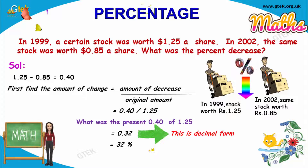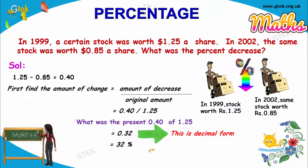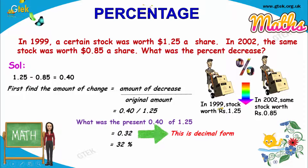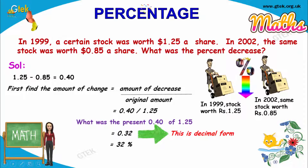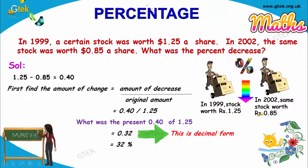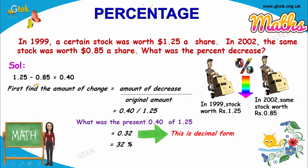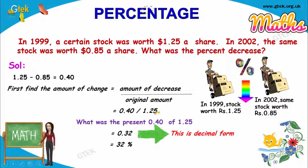We'll move to the next problem. In 1999, a certain stock was worth $1.25 a share. In 2002, the same stock became $0.85. What was the percent decrease? The value went from $1.25 to $0.85, so there is a decrease. The amount of decrease is 1.25 minus 0.85, which is 0.40. The initial rate is 1.25, so 0.40 divided by 1.25 gives a value of 0.32. The percentage decrease is 32%.